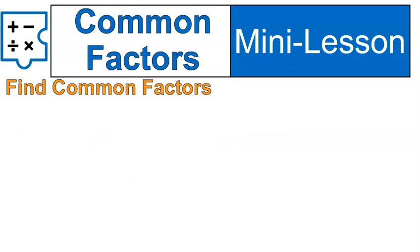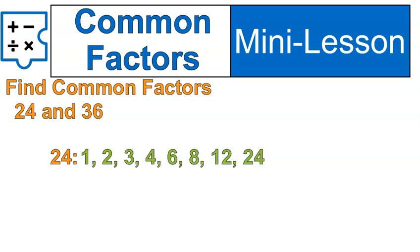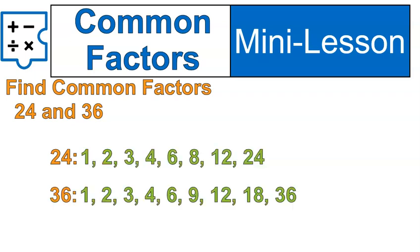When we're talking about common factors, we'll be given two numbers, and you're asked to find all of the factors that are common between those two numbers. Here's an example. 24 and 36. If I was asked to find the common factors of 24 and 36, I would list out all of the factors of 24, all of the factors of 36, and then identify the numbers that are common between them.